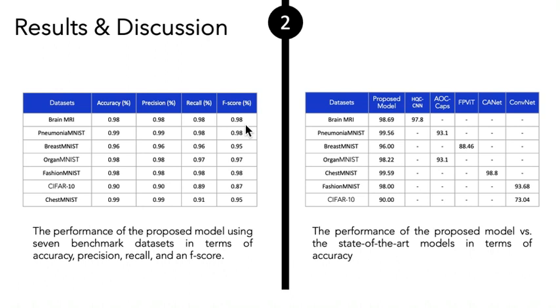The second one, we got 99.56 percent, while the AOC-caps got 93.1. This is the second state-of-the-art model. The third state-of-the-art model, we got for Breast MNIST 96 percent, while we got for FPVET 88.46 percent.